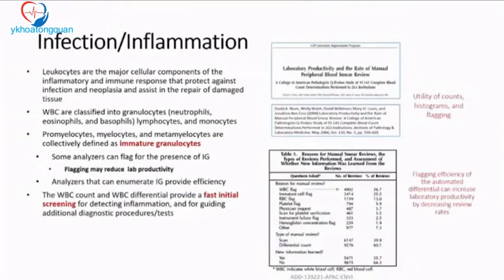Leukocytes are the major cellular components of any immune response in the body, as protection against infection, inflammation, malignancy, or any kind of repair the body has to undergo. WBCs are classified into granulocytes — which includes neutrophils, eosinophils, and basophils — and agranular cells: lymphocytes and monocytes.